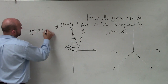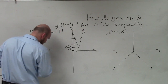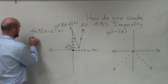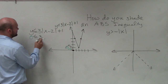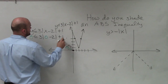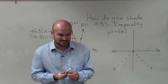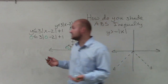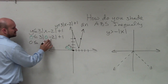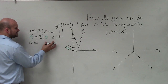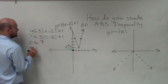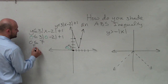So I have my equation here. Let's plug in (0, 0) with green. So: 0 is less than or equal to 3 times the absolute value of 0 minus 2, plus 1. We evaluate: 0 minus 2 is negative 2, absolute value of negative 2 is 2, 2 times 3 is 6, 6 plus 1 is 7. So 0 is less than or equal to 7 — that is true.